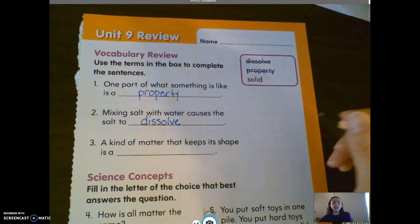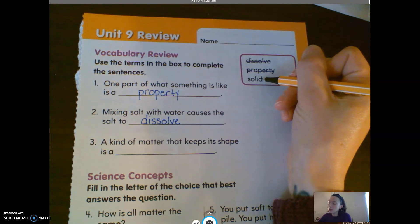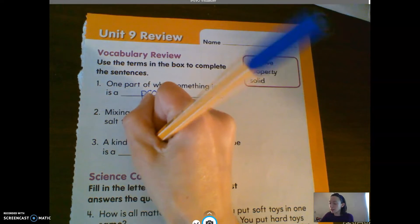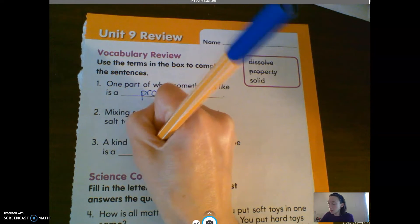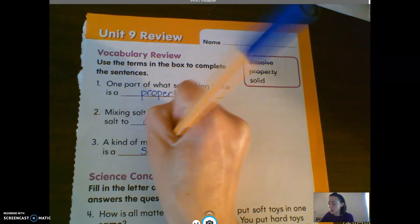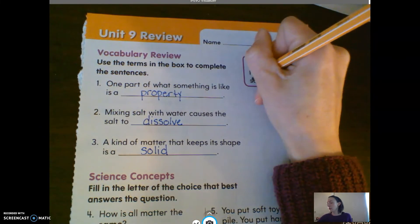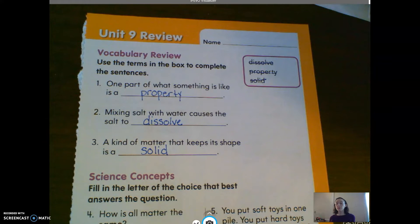Number three says, a kind of matter that keeps its shape is a, well that would have to be the last one, which is a solid. Solids keep their shape. All right, give you a chance to write those ones out.